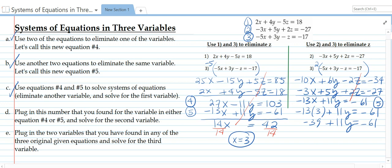Add 39 to both sides. These two cancel. We get 11y equals negative 22. Divide both sides by 11. We get y equals negative 2.